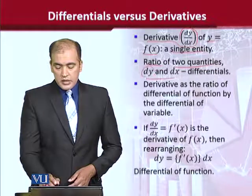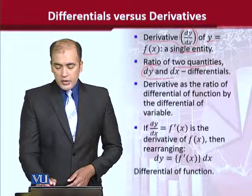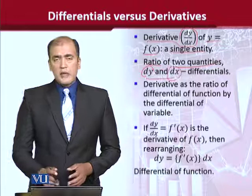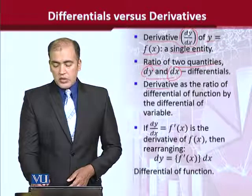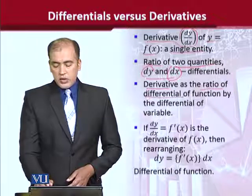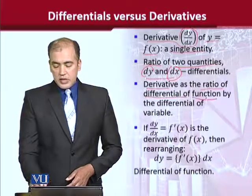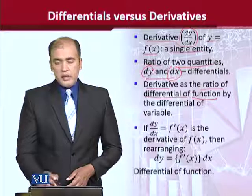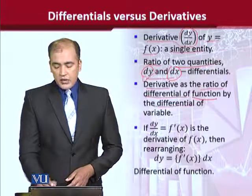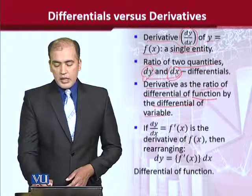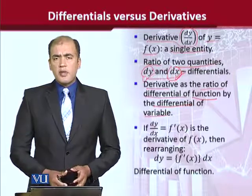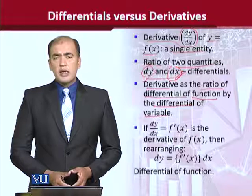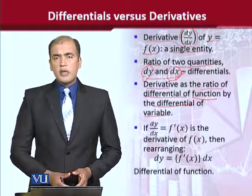The first term, dy, is the one that is getting divided by dx. Once we do that, we get the derivative which represents the ratio of the two differentials. The first differential is of the function, that is dy. The second differential is of the variable, which is dx. So dx is the differential of the variable and dy is the differential of the function.